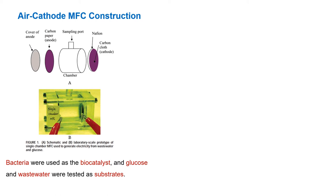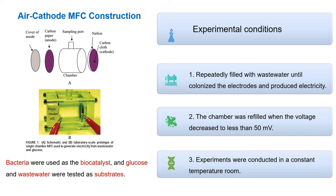Next, we talk about experimental conditions. First, the anode chamber was repeatedly filled with wastewater until bacteria colonized the electrodes and produced electricity. Second, the chamber was refilled when the voltage decreased to less than 50 millivolts. Third, experiments were conducted in a constant temperature room.